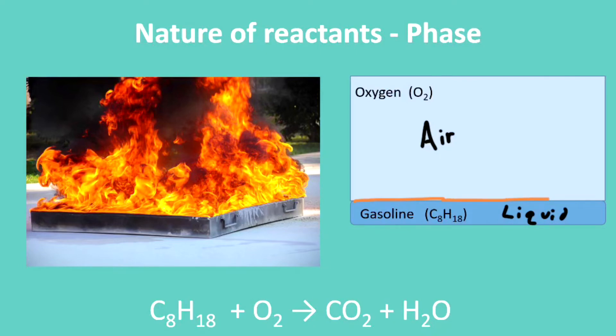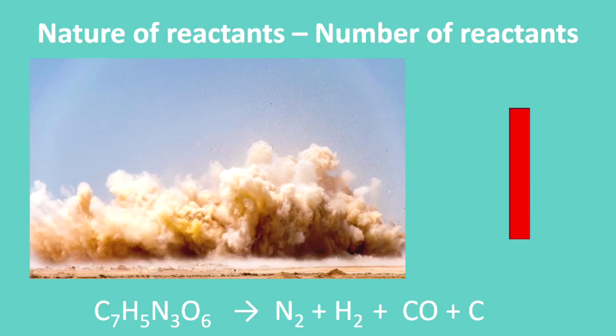So occasionally an air molecule, oxygen in this case, will come down and collide with the liquid, and that might bring forward a reaction. This is one reason that gasoline burns kind of slowly. It's because there's not a good mixture of oxygen and gasoline. They have to interact just at this one narrow point, the interface. Meanwhile, TNT, because it has just one reactant, doesn't rely on these collisions.